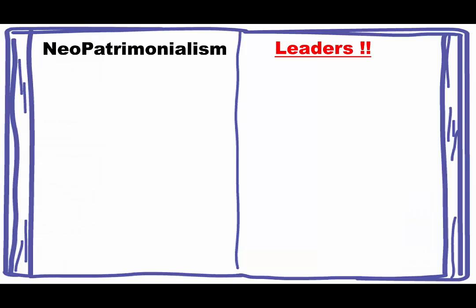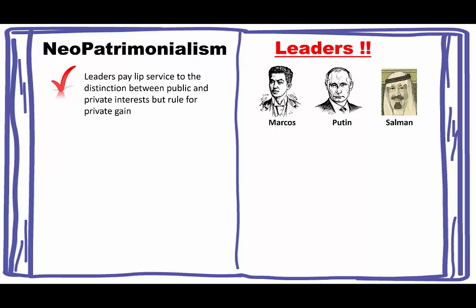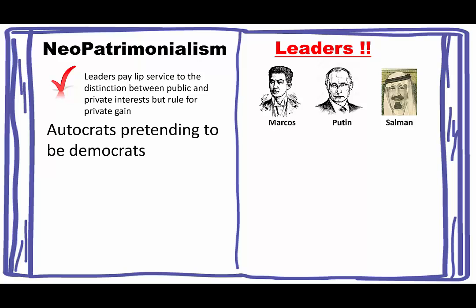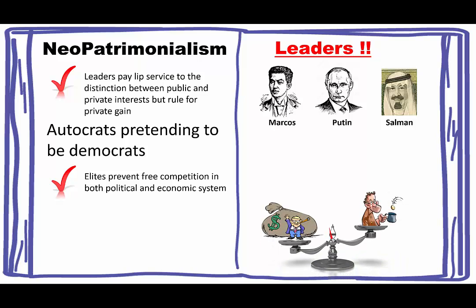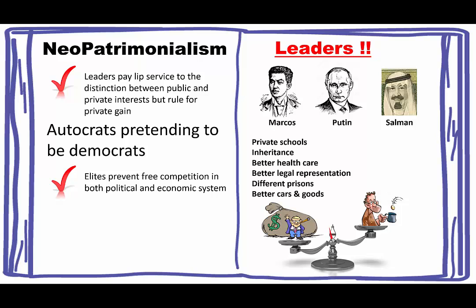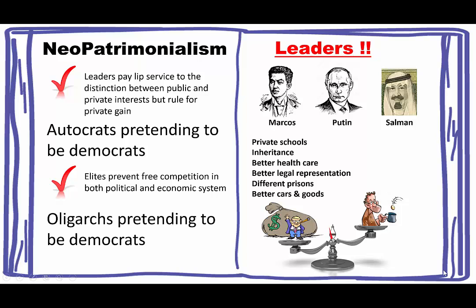Neopatrimonialism is another decay item, and this one is more focused on the leaders themselves. The leaders pay lip service to the distinction between public and private interest but rule for private gain. Marcos, Putin, and Salman are examples of leaders who are basically autocrats pretending to be democrats. Another example is elites preventing free competition in both the political and economic system — private schools, inheritance, better healthcare, better legal representation, different prisons — where the system supports elites. It's oligarchs pretending to be democrats.